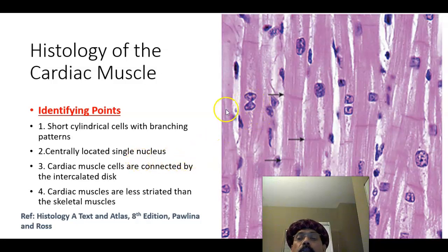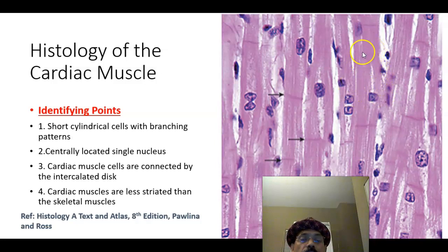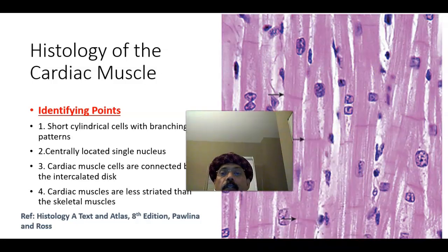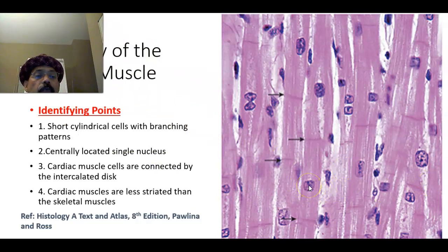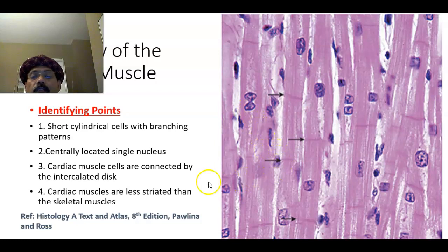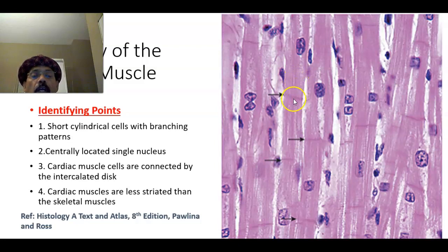First of all, we will go to the identifying points. These are short cylindrical cells with a branching pattern and centrally located nucleus. Nucleus is located centrally — usually one nucleus, but we may have two. Cardiac muscles are less striated than the skeletal muscle. We also have striation here, but it is less than that of the skeletal muscle. The cardiac muscle cells are joined to one another by means of the intercalated disc.